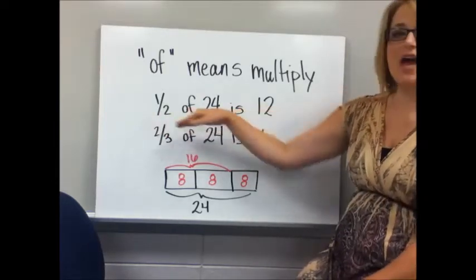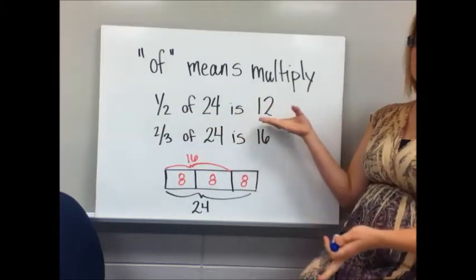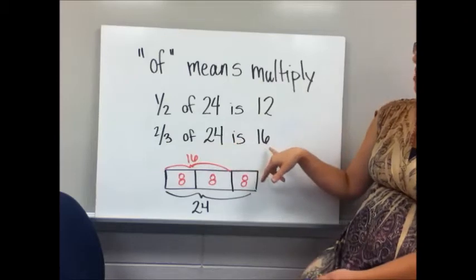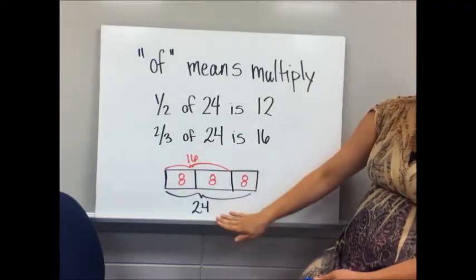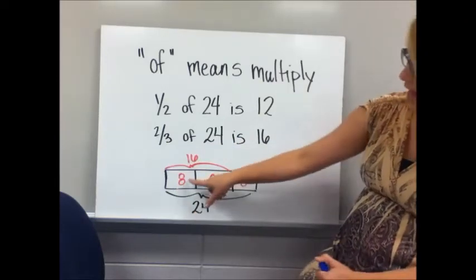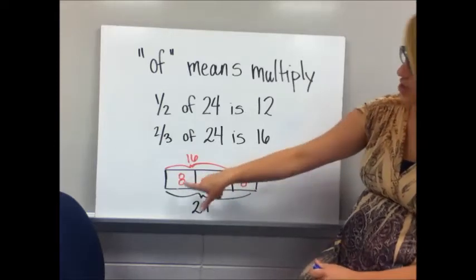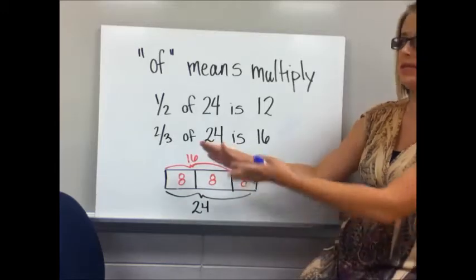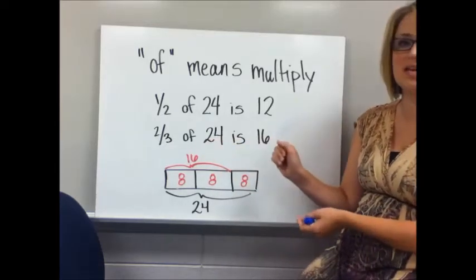If I ask you what half of 24 is, you would easily say that's 12, or I could even ask you two-thirds of 24, and you would know it's 16 because you can take 24, split it up into three groups. There would be eight in each group, and two of those thirds, two of those eights, would make 16. So it makes sense that two-thirds of 24 is 16.